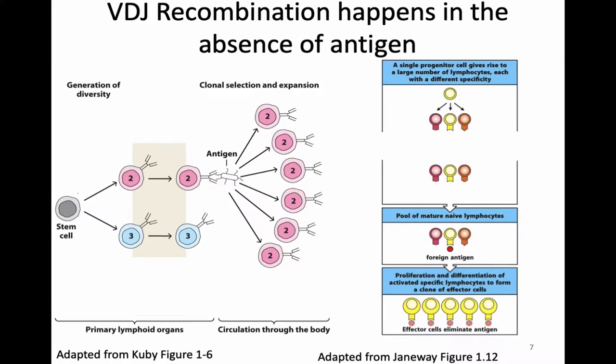When I've described VDJ recombination thus far, I've generally described it as VDJ recombination happening in the absence of foreign antigens. The foreign antigen is not present in the primary lymphoid organ. In the primary lymphoid organ, we're generating diversity in our lymphocytes — making one lymphocyte of each specificity. Then if one of those lymphocytes encounters antigen, it will proliferate and make more of itself in the periphery.